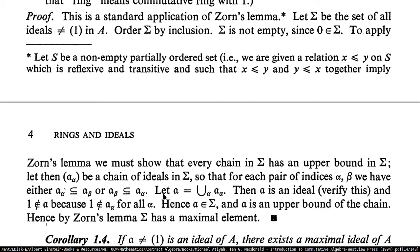He has the union of all the ideals — that makes sense. Then he says that this union of ideals, which is a chain of ideals, is an ideal itself. And you have to verify that.